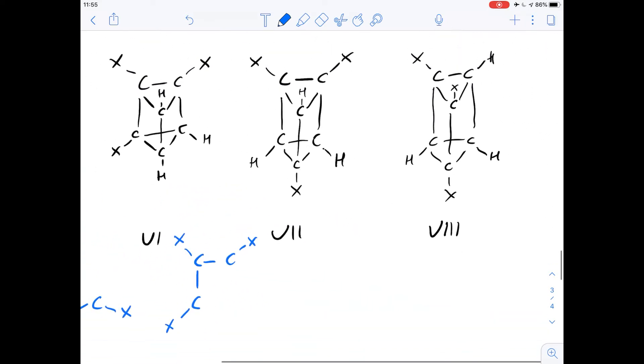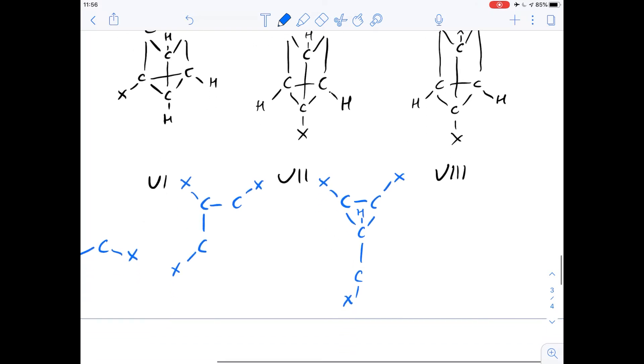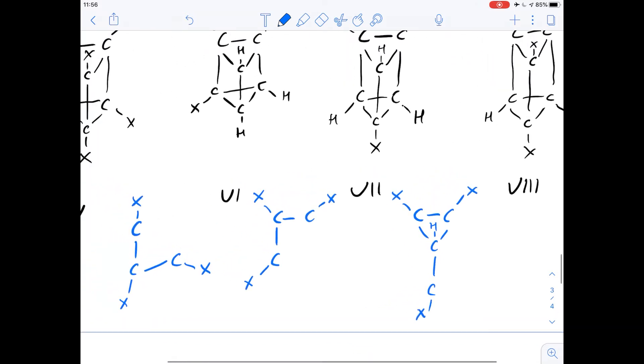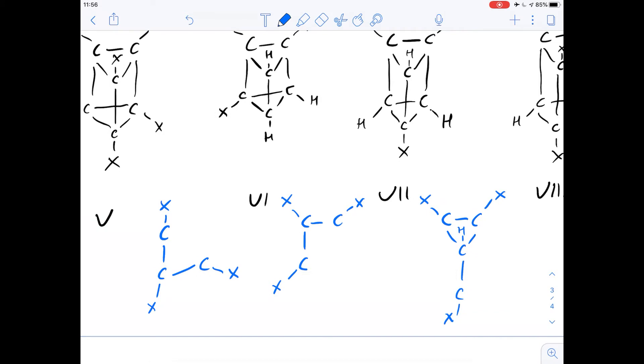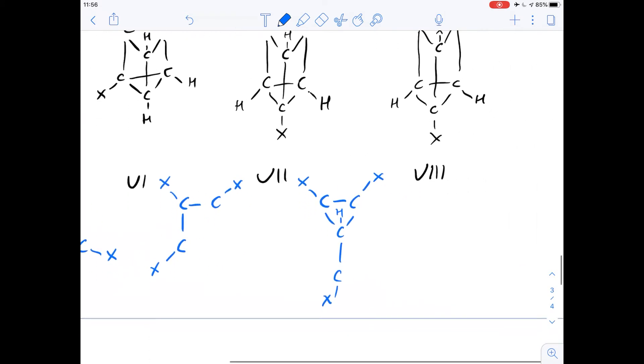What about structure 7? Well if you drew out just the carbons that have an attached group, you wouldn't get a straight line, you'd have to have this connecting carbon in the middle. Which means you can see clearly that these aren't equivalent. So 5 and 6 are equivalent, 6 and 7 are not.